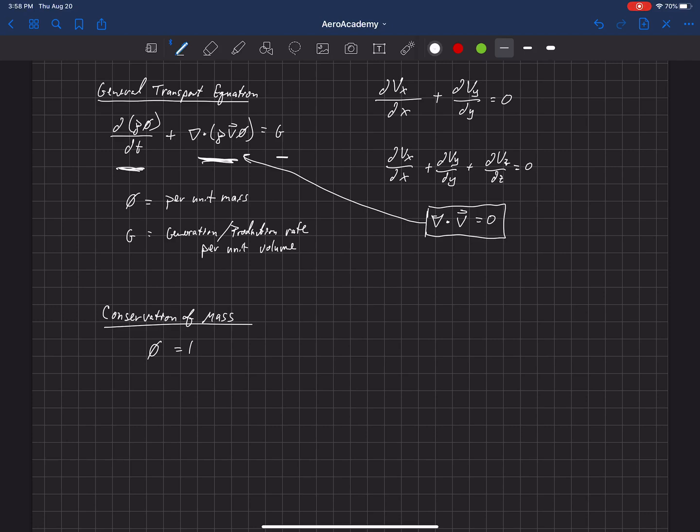So now we can just plug this right into that equation. What we'll get is del rho dt plus del dot rho v equals, and g is our generation or destruction term. Mass cannot be generated or destroyed, so that's got to be equal to 0. So this is our general conservation of mass equation.